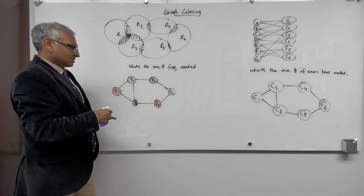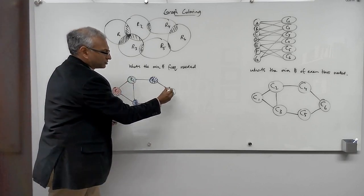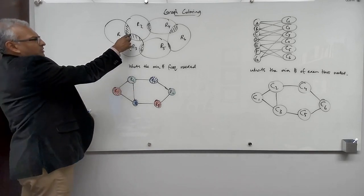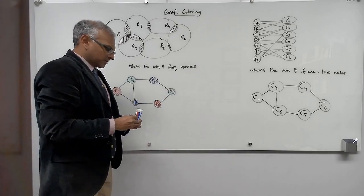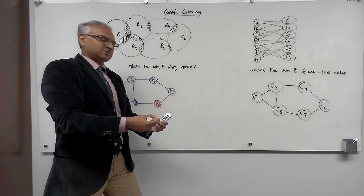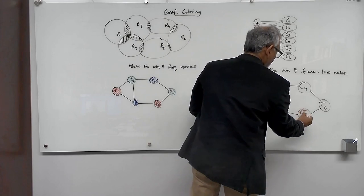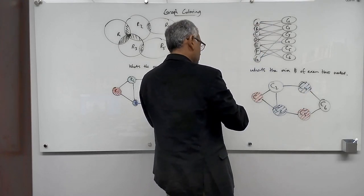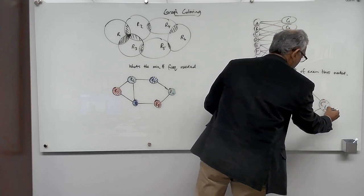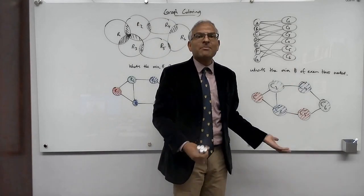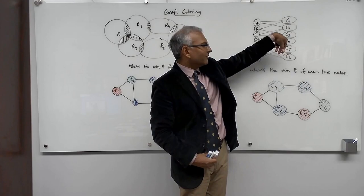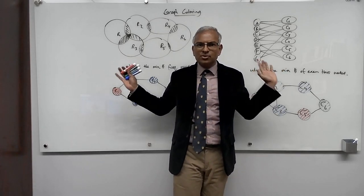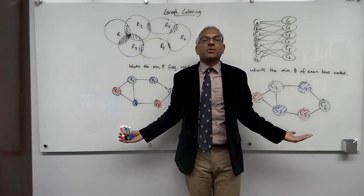If I don't want to start a new frequency, I'll use green for the last node. So I can get away with three frequencies, and not fewer — because these three nodes all interfere with each other and need three frequencies. The same logic applies to exam times: this course gets the red slot, this one gets red, this gets blue, this blue, this green, and this green. With just three exam times, all students can take all their exams.